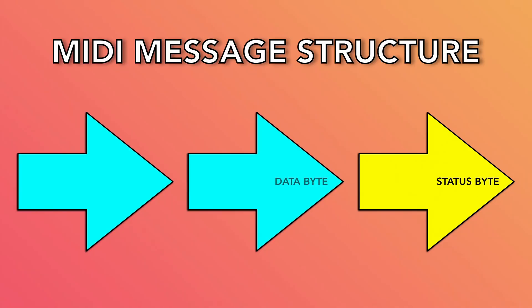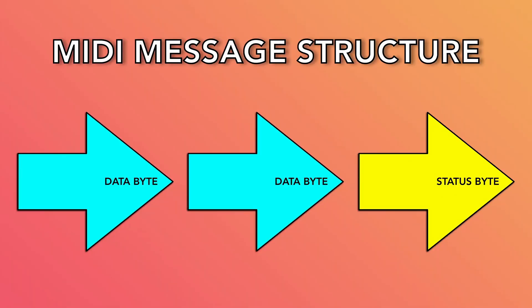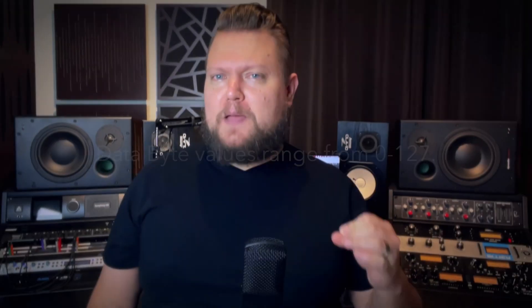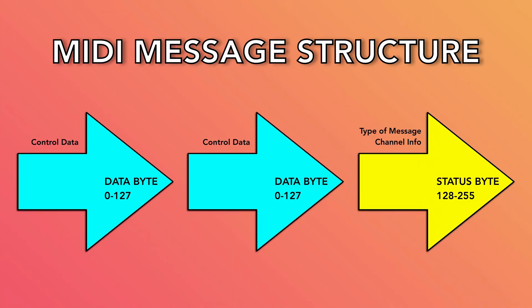Most MIDI messages consist of a status byte followed by 2 data bytes. 8-bit messages have a resolution of 256 — that's 256 discrete values to send control data. The data bytes use the first half: values of 0 to 127. The status byte communicates data with the second half: 128 to 255. The reason most MIDI values you see in your DAW are 0 to 127 is because of the data bytes. But first, let's talk about status bytes, because a MIDI message means nothing without the status byte.